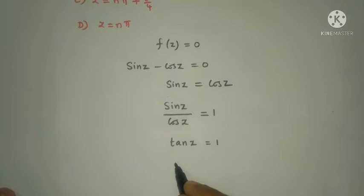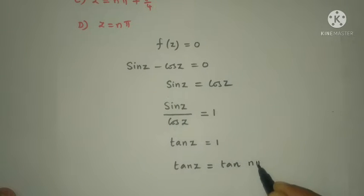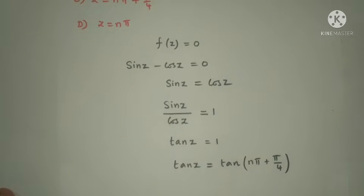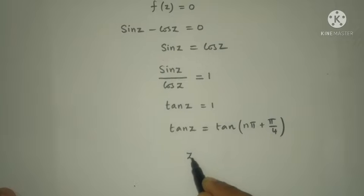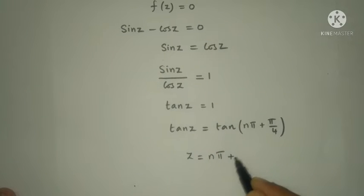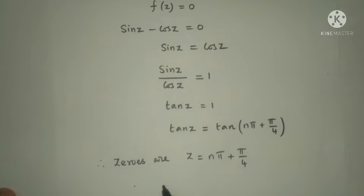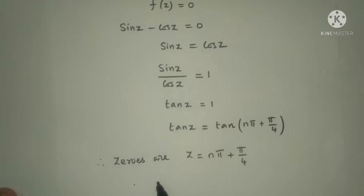Since tan z = 1, and tan(nπ + π/4) = 1, the zeros are z = nπ + π/4. Therefore the zeros are z equal to nπ plus π/4. The answer is option C.